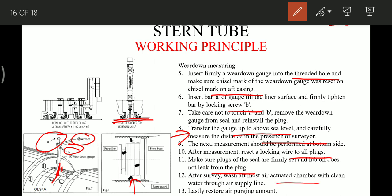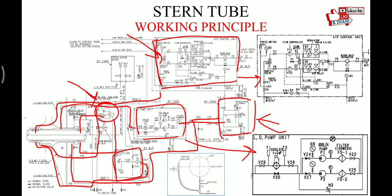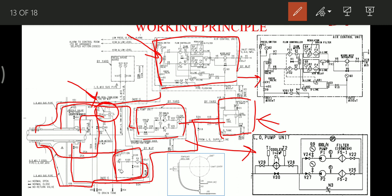After survey, wash the aftmost air actuation chamber with clean water through the air supply line. Lastly, restore the air purging amount. Thoroughly clean this area — for cleaning, a fresh water line connection is provided in the air handling unit. After everything is done, restore the air pressure. The fresh water supply line connects here so that the chamber between rings 0, 1, and 2 can be thoroughly cleaned.